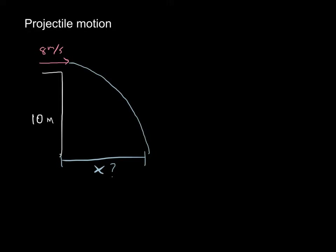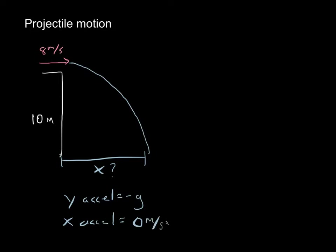In the y direction, this is just like a falling object, so our acceleration in the y direction is equal to negative g — negative 9.8 meters per second squared. It accelerates in that direction exactly like any other falling object. In the x direction, once we release the ball, there's no other force acting on it, neglecting air resistance, so there's no acceleration. Our acceleration in the x direction in any projectile motion problem is always zero meters per second squared.